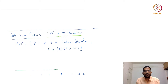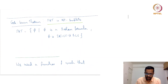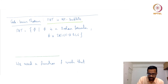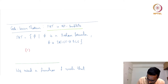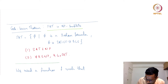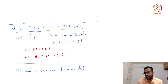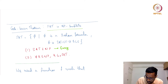SAT is the set of all Boolean formulas that are satisfiable — a Boolean formula that can be assigned true/false values such that the formula evaluates to true. To show SAT is NP-complete, we must show it is in NP, and that all languages in NP reduce to SAT in polynomial time. Step 1 is rather easy and step 2 is more involved.